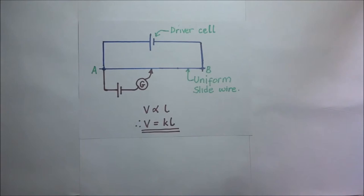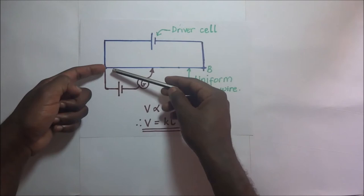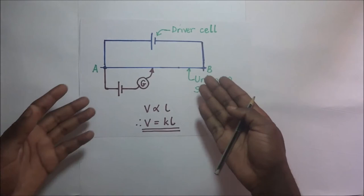Now since the wire has got a uniform cross-sectional area, it means its resistance is also going to be uniform. And since it's going to have a uniform resistance all through — by uniform resistance I mean it is having a uniform resistance per centimeter — it means that this driver cell which is connected to this wire is also going to deliver a uniform potential difference per centimeter, which we are calling pd per unit length.